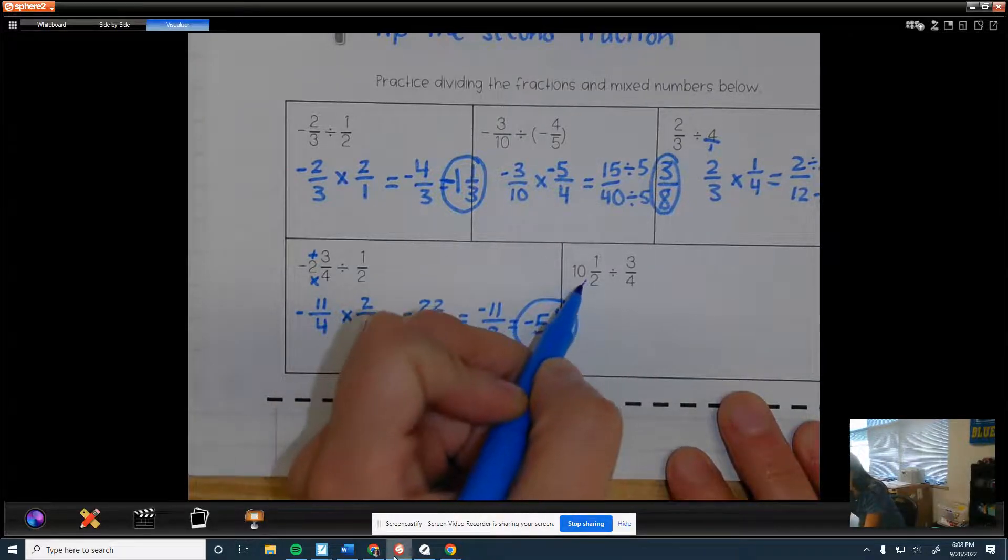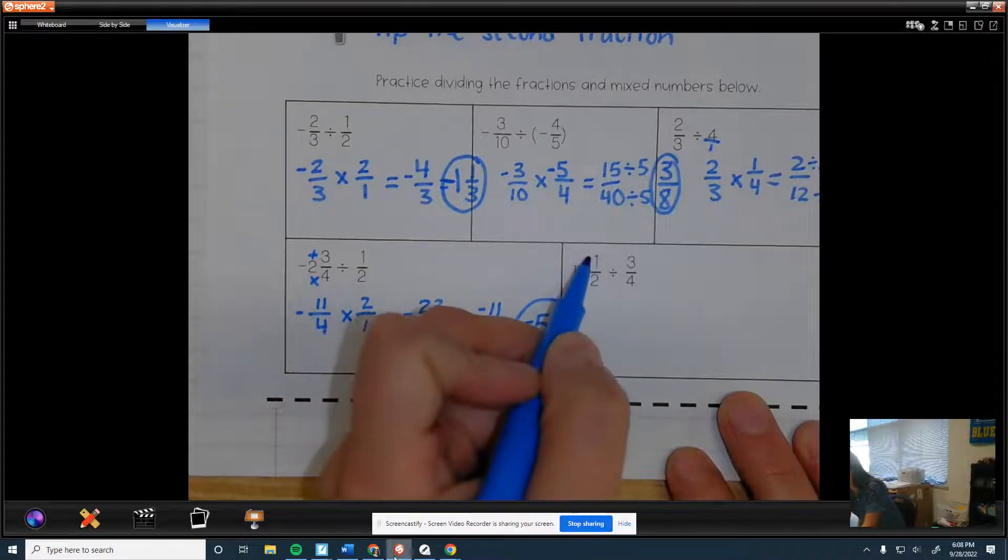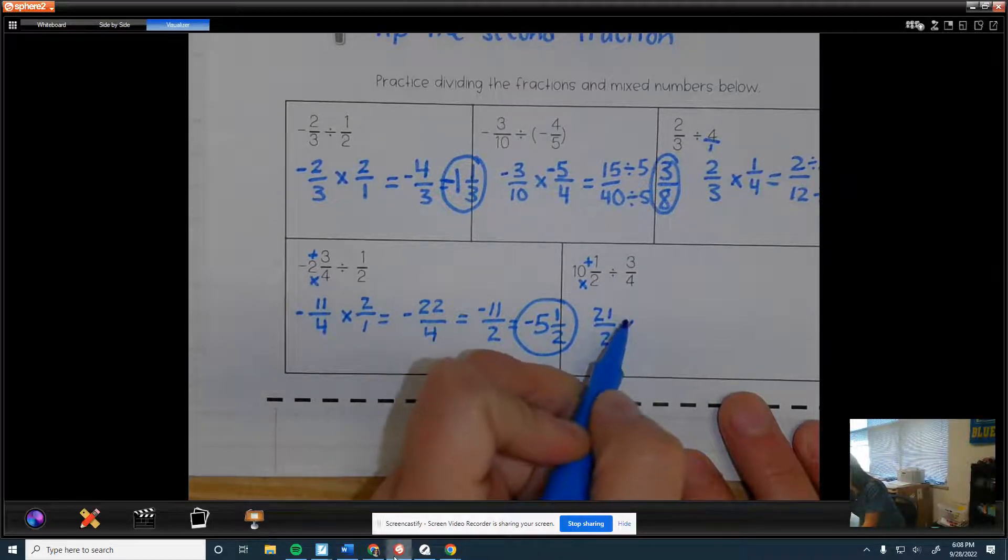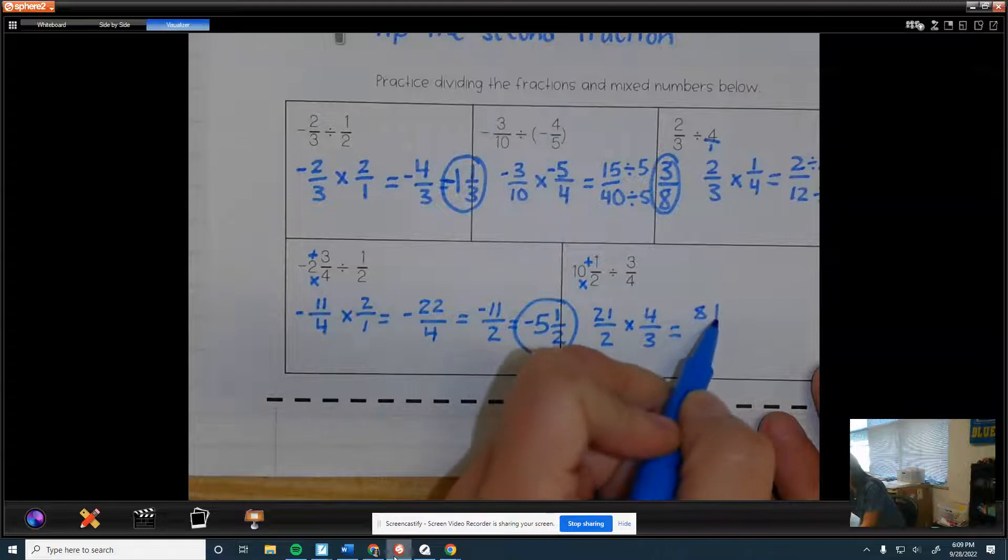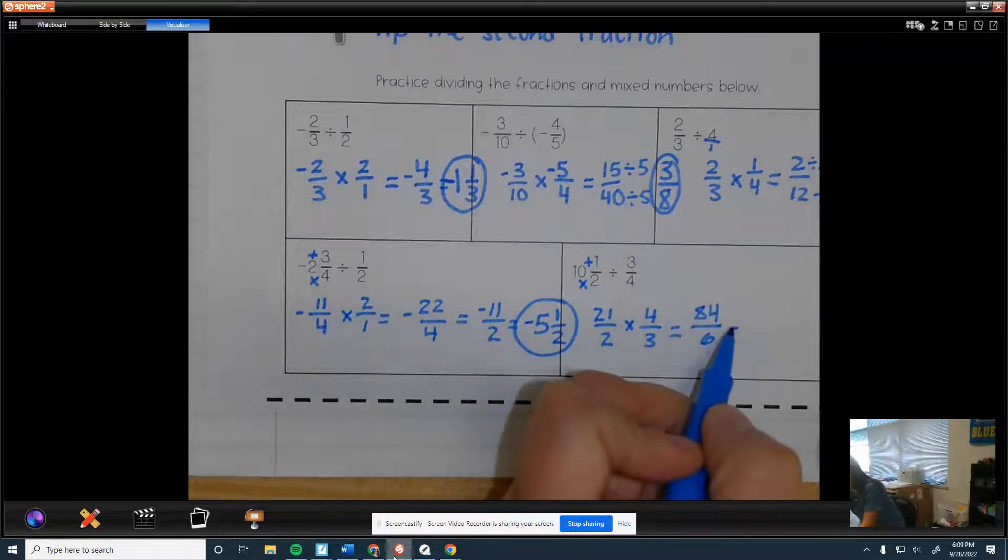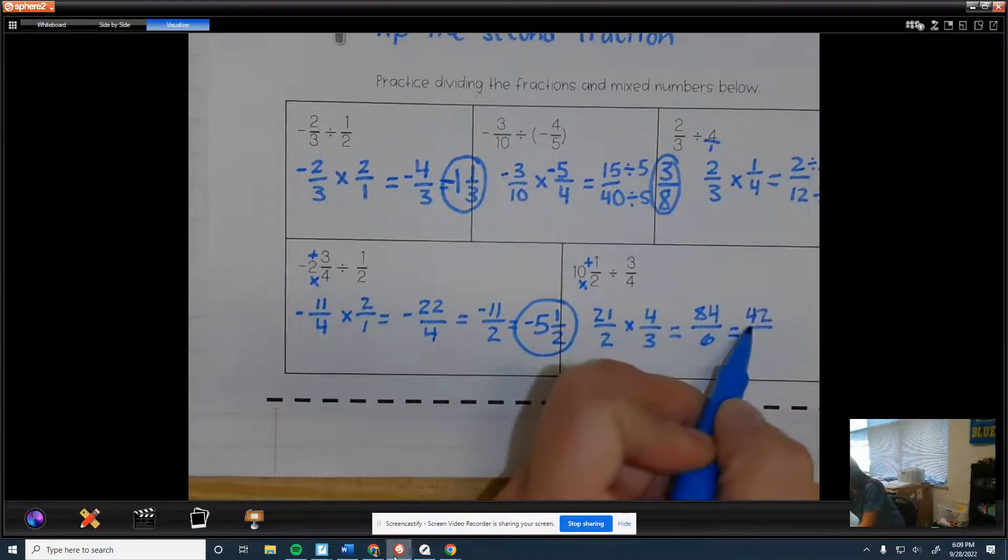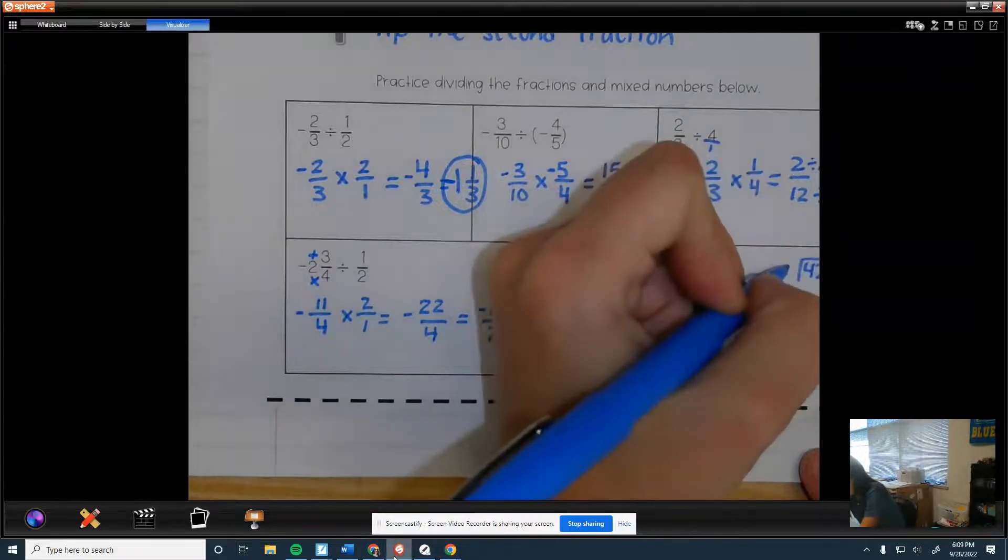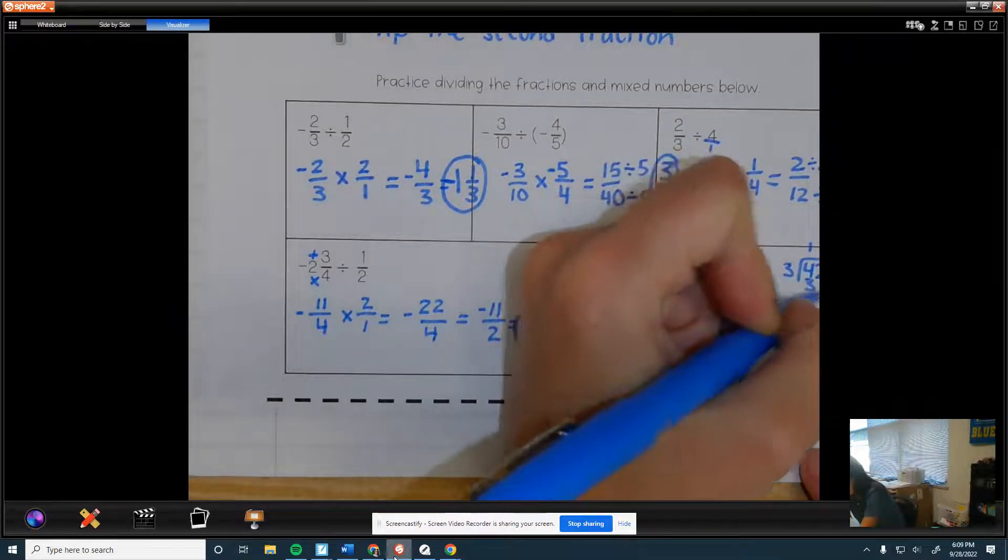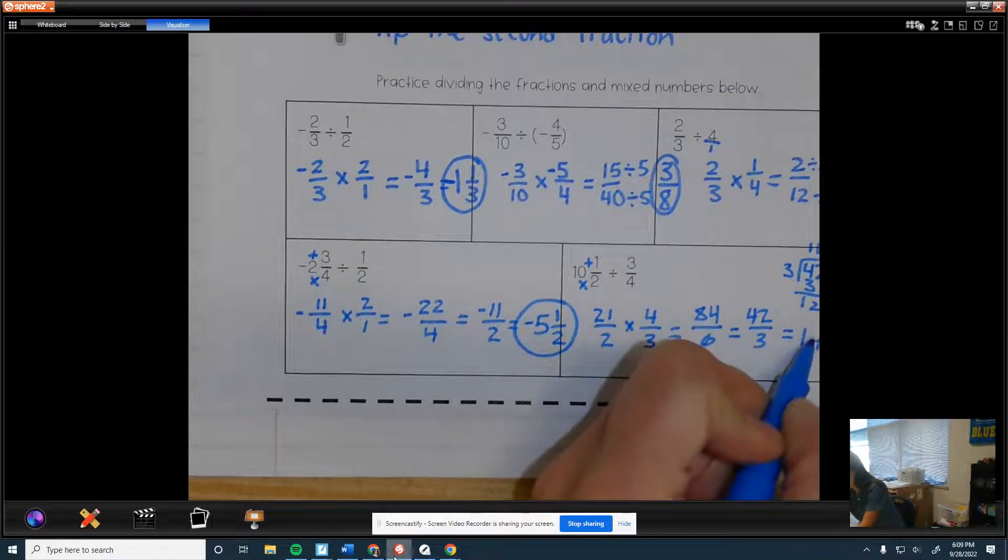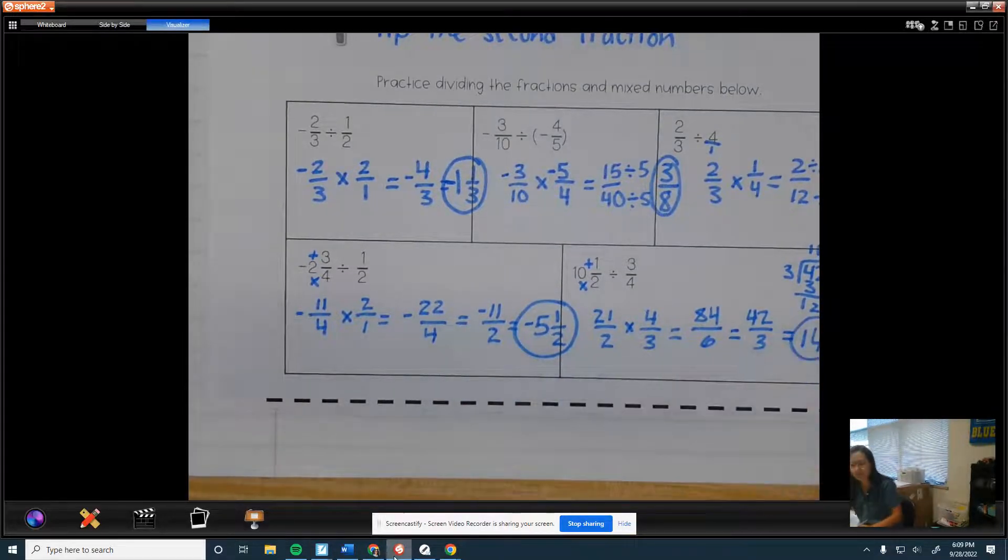Alright, this one, we got 10 and a half divided by 3/4. So two times 10, 20 plus one, 21/2. And then just keep that, change the sign, flip this, the reciprocal is 4/3. 21 times four is 84. Two times three is six. I know these are even, so let me cut them in half. That's 42 and three. I feel like 42 is divisible by three. Let me check. 42 divided by three is nice, 14. So that means 42 divided by three is just 14 wholes. So we are done.